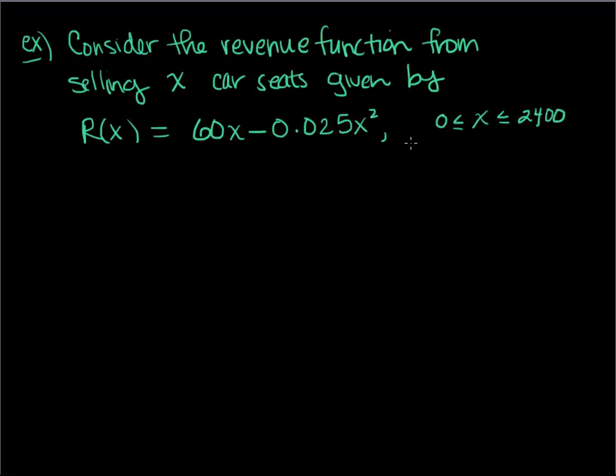Now why that lock on 2400? Well, that's basically the domain over which this revenue function makes sense. Possibly as we get more than 2400 maybe this revenue function doesn't model that well after that or maybe when you graph this function, this is a parabola facing down.